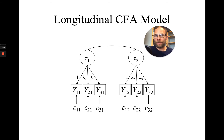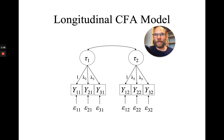That's frequently the case because we use questionnaire data in the social sciences where the different indicators might be different items — they might show different item wording, or cover slightly different facets of the construct we want to measure. Therefore, we often see this inhomogeneity in the covariance structure such that the same item shares more variance with itself across time, meaning it has a higher correlation with itself across time than with the other indicators.